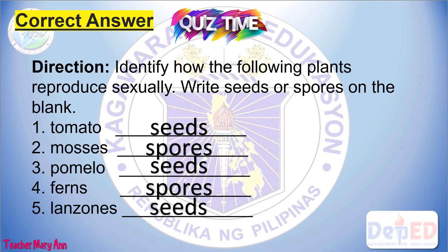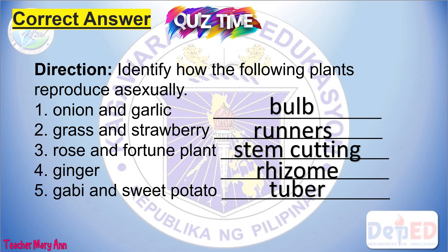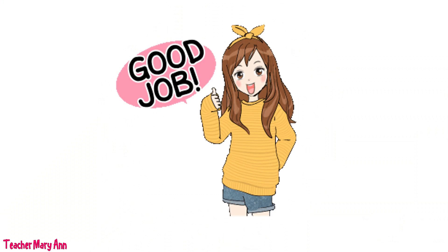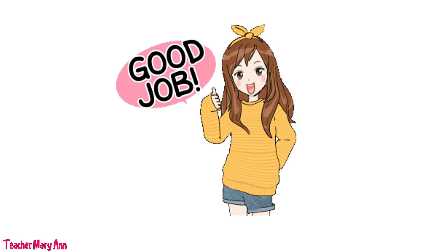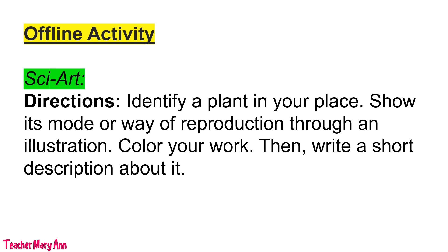Okay, check your work! Very good! Congratulations for finishing our lesson for today! For your offline activity, identify a plant in your place and show its mode or way of reproduction through an illustration. Color your work, then write a short description about it.